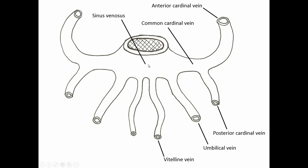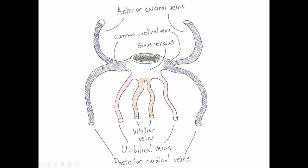A lot of what we're going to see involves permutations and changes in the size of these vessels from right to left. From here on out we're going to color coordinate things: the anterior and posterior cardinal veins as well as the common cardinal veins in blue, the umbilical veins in pink, and the vitelline veins in reddish orange.